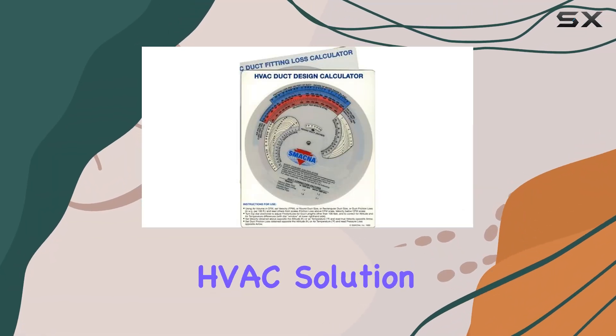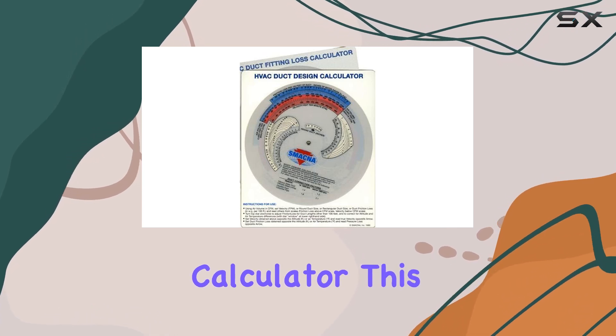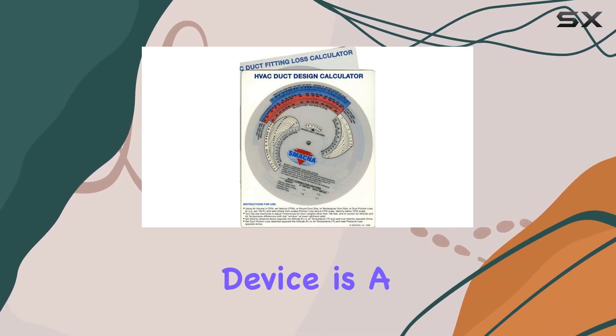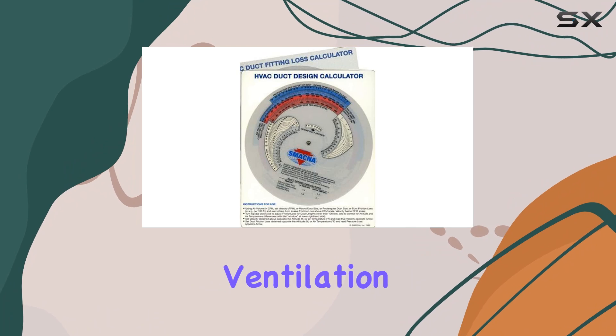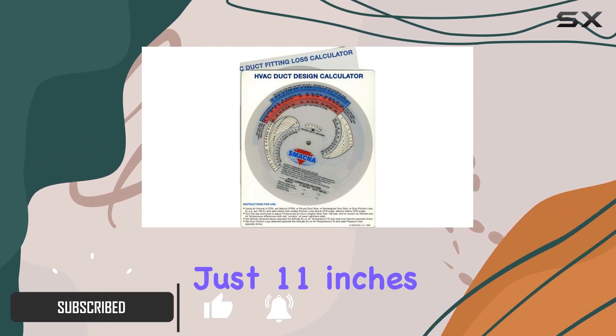Looking for the ultimate HVAC solution? Look no further than the SMACNA duct system calculator. This sleek, compact device is a game changer for anyone in the heating, ventilation, and air conditioning industry. Measuring just 11 inches in length and 8 inches in width, it's incredibly portable, making it perfect for on-the-go professionals.